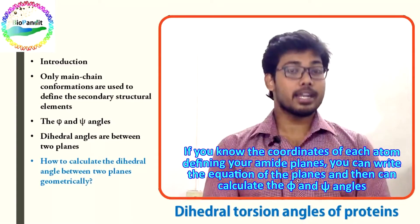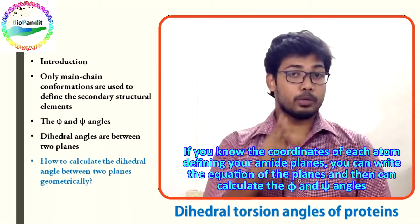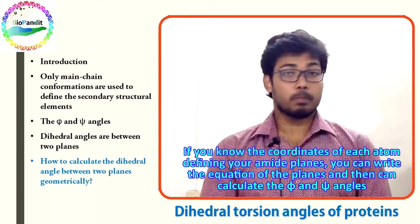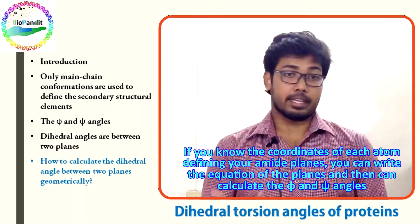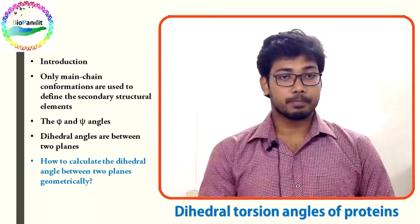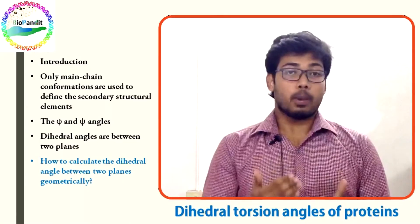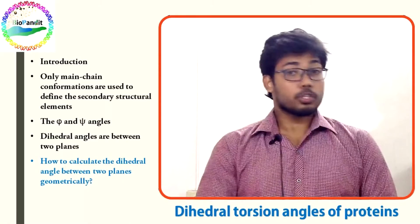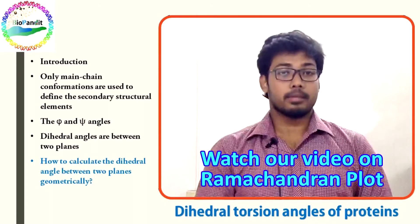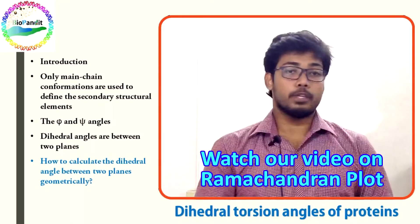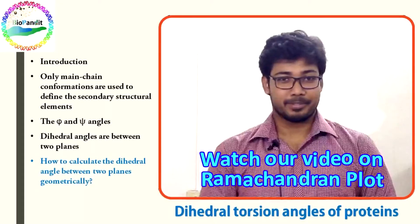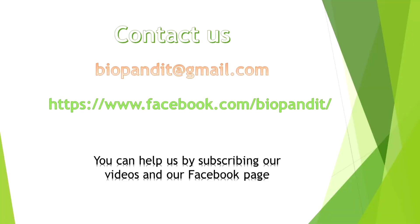If you know the coordinates of each atom defining your amide planes, you can write the equations of the planes and calculate the phi and psi angles using this formula. For the distribution of these angles in biological proteins, watch our video on the Ramachandran plot — you will find your answer there.